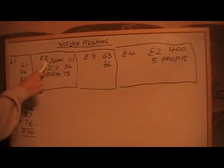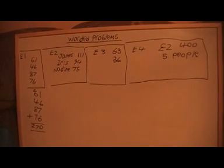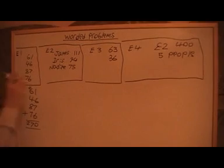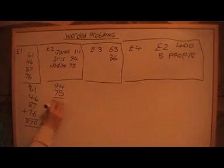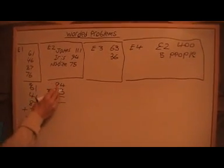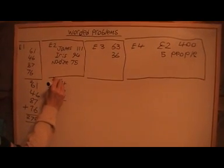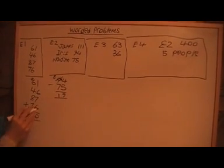Now the next problem: these people are playing dots and we want to find the differences between all the scores. We start off with the first one. We can't do that subtraction directly, so we'll borrow. That's 9, that's 1, so that's 19.